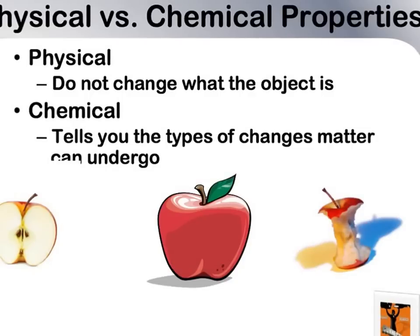Physical properties don't change the object — they're just the characteristics that help you identify that object. Chemical properties aren't really telling you what that object looks like, but they're telling you the types of changes that can happen.